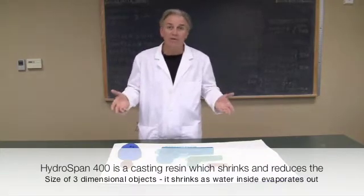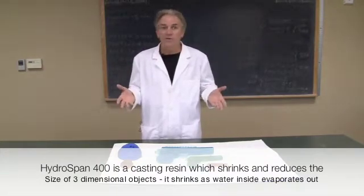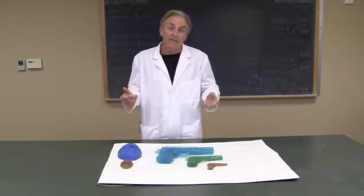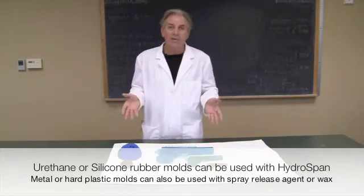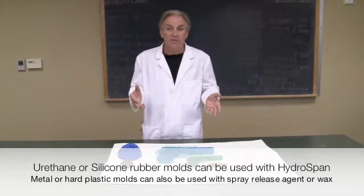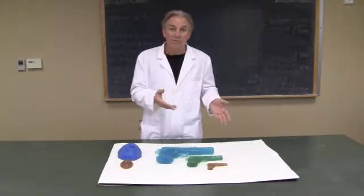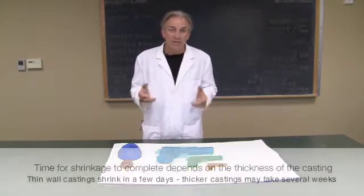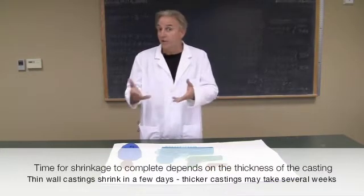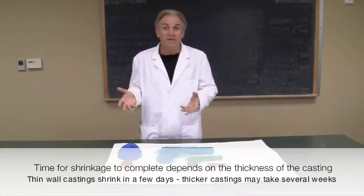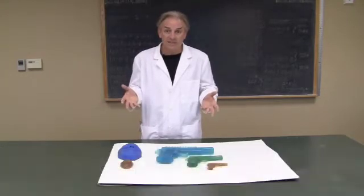The product is called HydroSpan 400. HydroSpan 400 is a product that's mixed with water and poured into a silicone mold. It cures very rapidly, and within about two or three minutes you pull the part from the mold and it's allowed to dry over a period of days. It can be used in a food dehydrator or in a dry, low humidity environment to achieve the fastest dehydration.